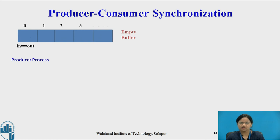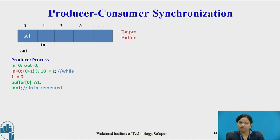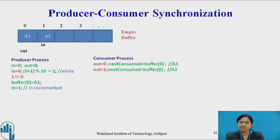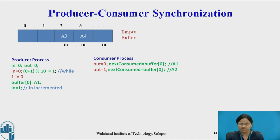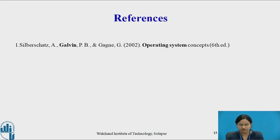Now, the producer-consumer synchronization. Suppose producer and consumer are executing simultaneously. Initially there is no item in the buffer, so the producer produces an item at position 0 and increments 'in', placing item A2. At the same time, the consumer's 'out' is 0, so it consumes the first item and increments 'out'. The producer increments 'in' and produces an item while the consumer simultaneously consumes. In this way, producer and consumer are synchronized. Synchronization must be maintained in the producer-consumer problem. These are the references. Thank you.